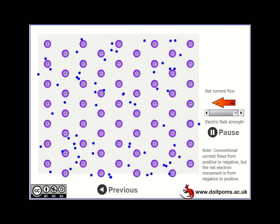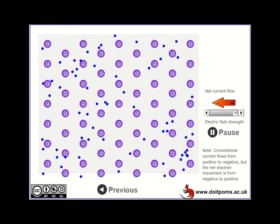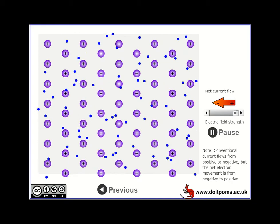As I increase the electric field, the electrons move faster and faster and you have a net flow. So this is our flow of current, and that's exactly how metallic conductors conduct electricity.